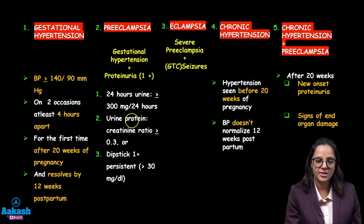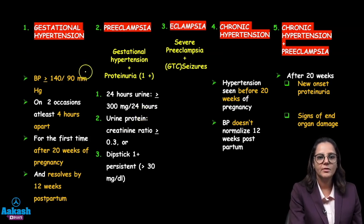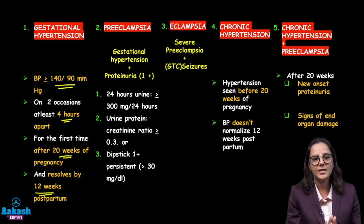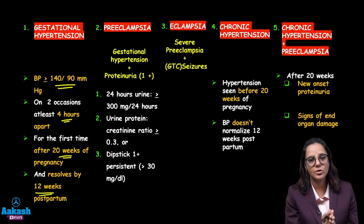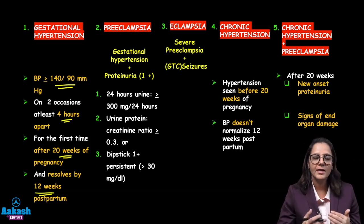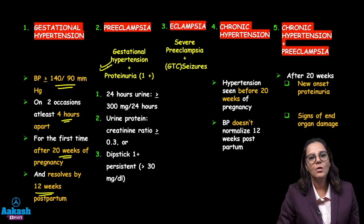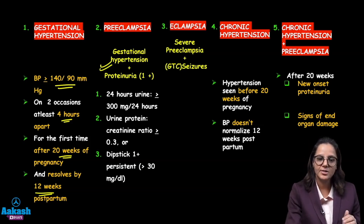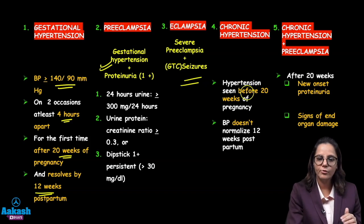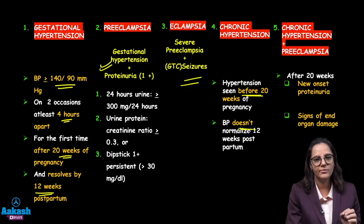A few important points on hypertension in pregnancy: Gestational hypertension is blood pressure more than or equal to 140 by 90 mmHg on two occasions four hours apart, after 20 weeks of pregnancy, resolving by 12 weeks postpartum. Preeclampsia is gestational hypertension plus protein in urine. Eclampsia is preeclampsia plus seizures. Chronic hypertension means raised blood pressure before 20 weeks and not resolving even 12 weeks postpartum.